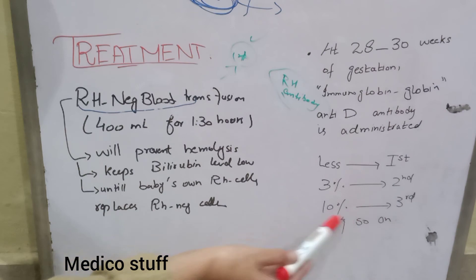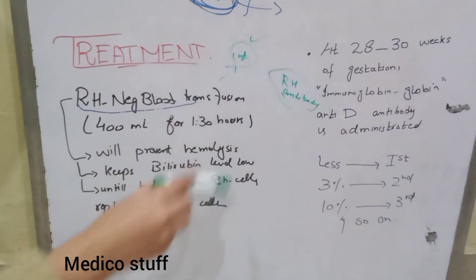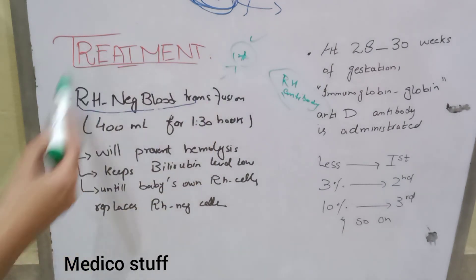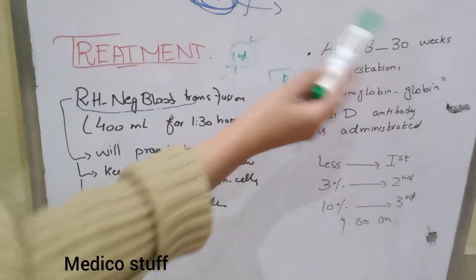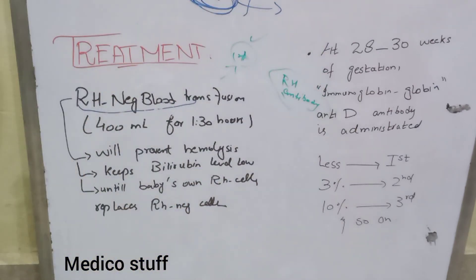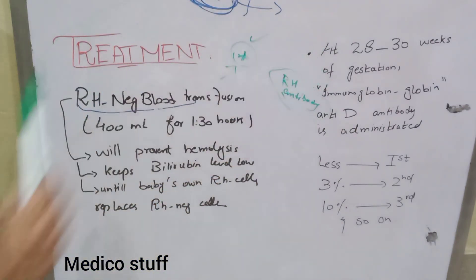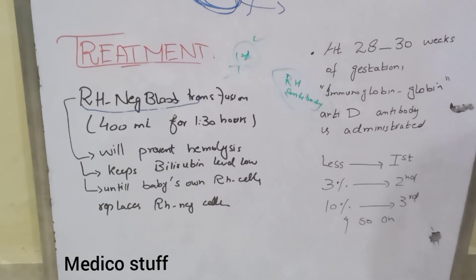By the third pregnancy, the risk is about 10%. So there are two treatment approaches: one is to treat the baby after birth, and the other is to prevent erythroblastosis fetalis from occurring by giving the anti-D injection to the expectant mother. This was the whole description of erythroblastosis fetalis. Hope you guys understand. Thank you.